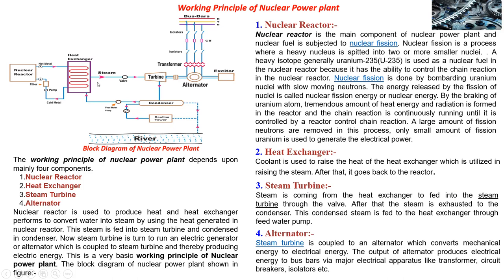The second component is the heat exchanger. Coolant is used to transfer heat from the reactor to the heat exchanger, which raises steam; after that, the coolant goes back to the reactor as hot metal and cold metal in a cycle. Third is the steam turbine: steam from the heat exchanger is fed into the steam turbine through a valve, and exhaust steam goes to the condenser; the condensed water is fed back to the heat exchanger through a feed water pump. Fourth is the alternator or generator, which is coupled to the steam turbine and converts mechanical energy into electrical energy, sending the output to the bus bar.